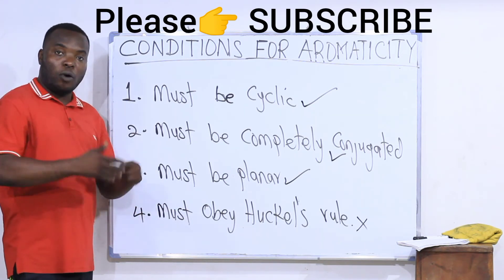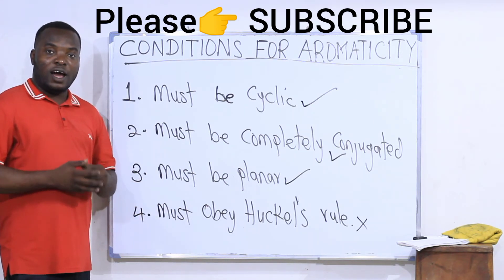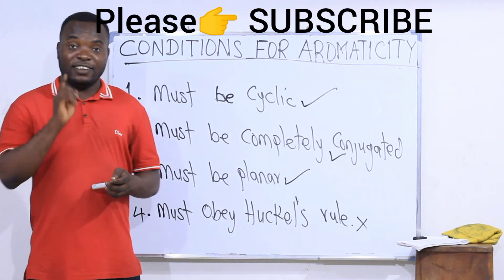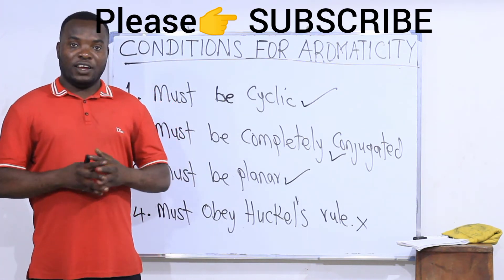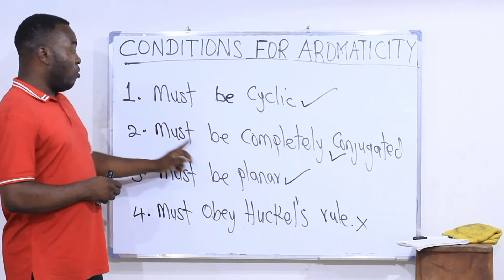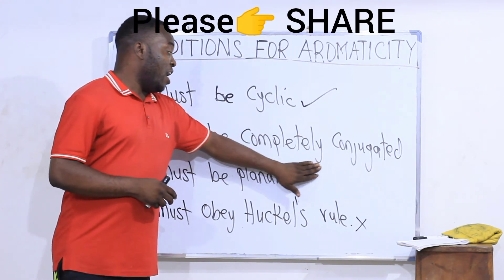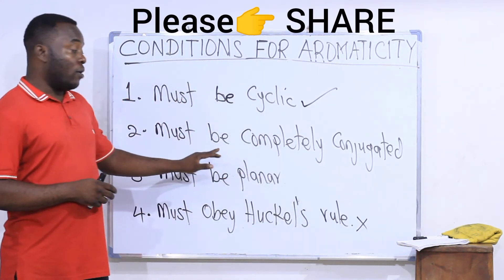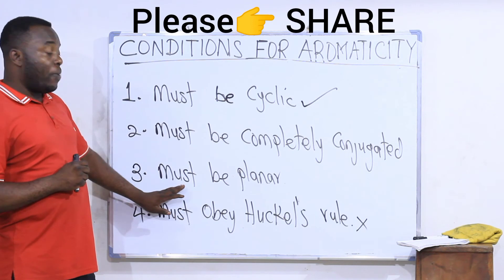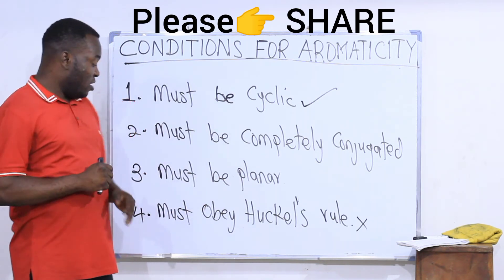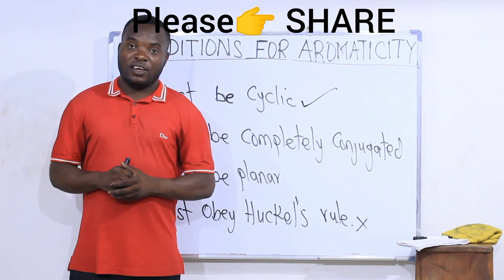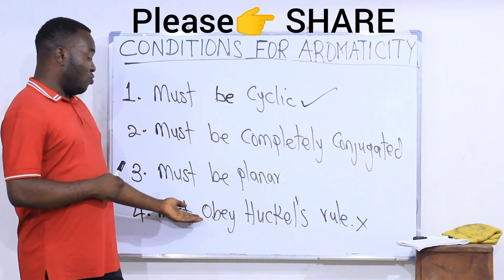In the next video we will look at what Hückel's rule is all about, then take a look at examples of compounds that can be said to be aromatic or not. To recap: the compound must be cyclic; it must be completely conjugated, meaning every carbon atom must have sp2 hybridization; it must be planar; and it must obey Hückel's rule of aromaticity.